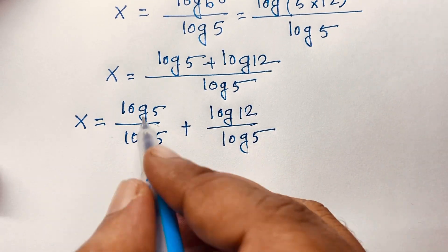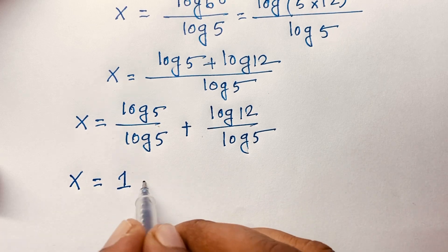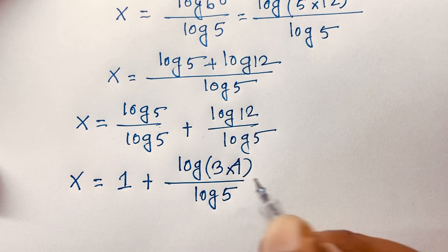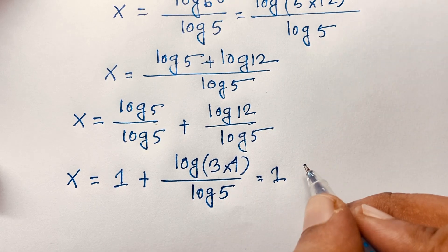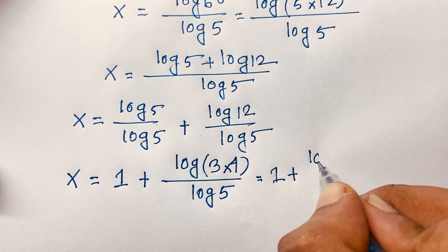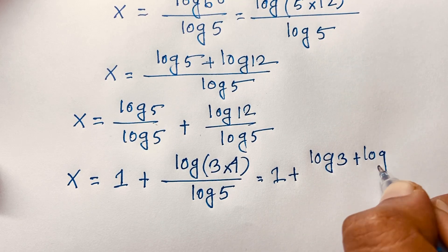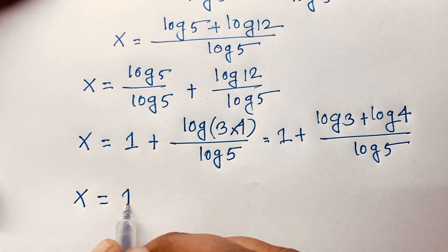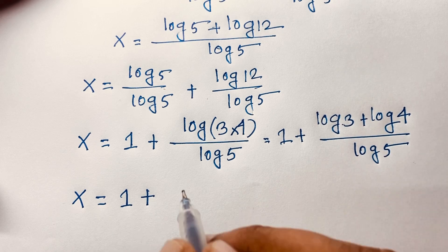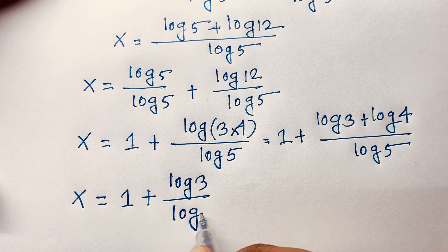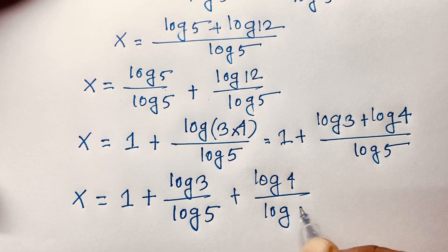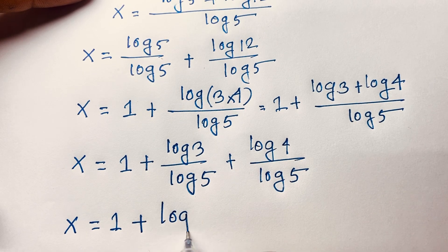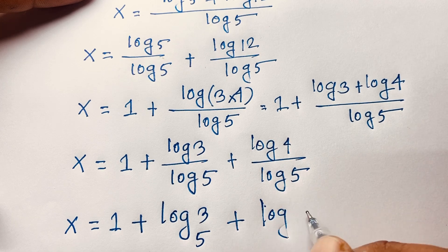You can see this cancels out. We find x is equal to 1, and then this log 12 — it will be log(3 times 4) over log 5. Again, applying the product rule, log(a·b) equals log a plus log b. So it will be log 3 plus log 4 over log 5. Separating the fraction, x is equal to 1 plus log 3 over log 5 plus log 4 over log 5. This gives x is equal to 1 plus log 3 base 5 plus log 4 base 5.